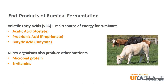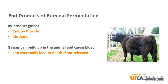The microorganisms also produce other nutrients for use by the animal. They can turn non-protein nitrogen into microbial protein. Urea is a common example of non-protein nitrogen. There are also some B vitamins that are produced by the fermentation. Additionally, byproduct gases such as carbon dioxide and methane result from ruminal fermentation. These gases can build up and cause bloat in the animal, and if they are not released, they can lead to death.